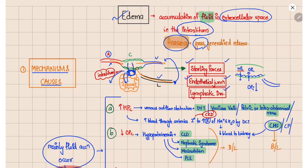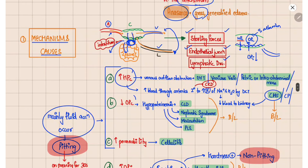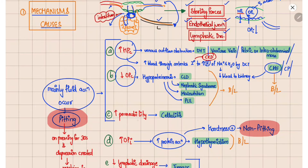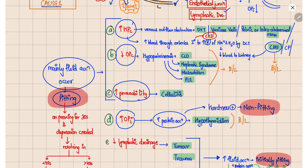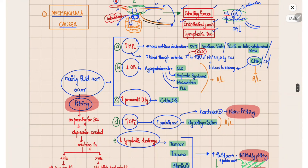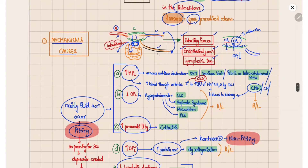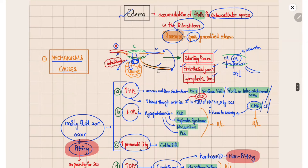The Starling forces are the hydrostatic pressure of the capillary and the oncotic pressure of the interstitium — both increase filtration of fluid. The oncotic pressure of the capillary, determined by serum albumin, decreases fluid filtration. So conditions where capillary hydrostatic pressure increases, capillary oncotic pressure decreases, endothelial permeability increases, interstitial oncotic pressure increases, or lymphatic drainage decreases will all lead to edema.